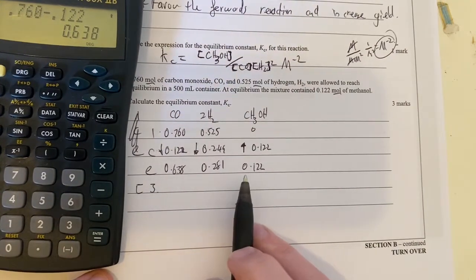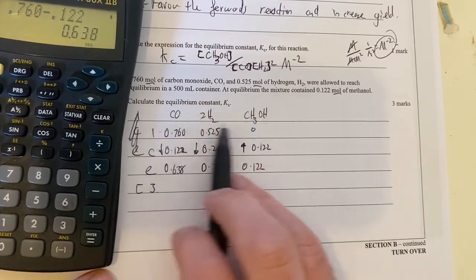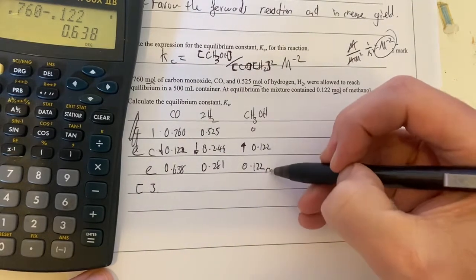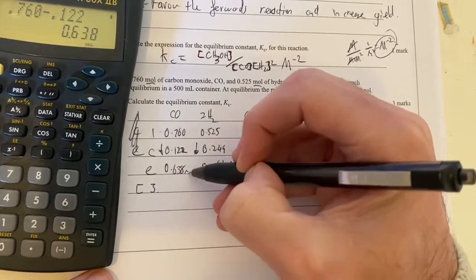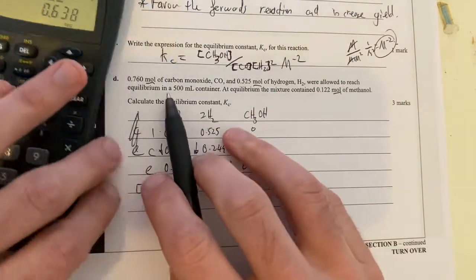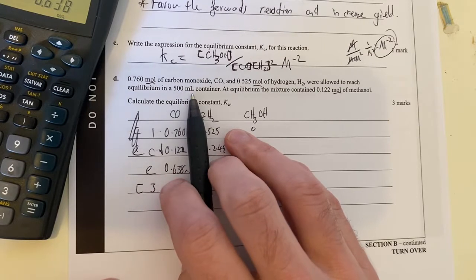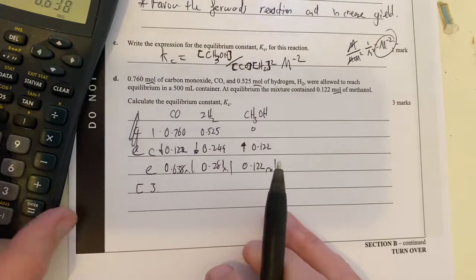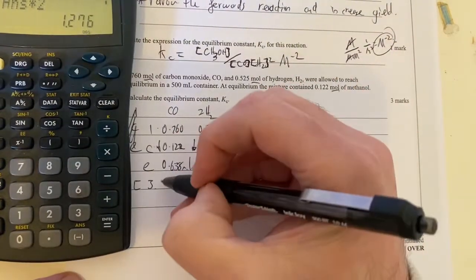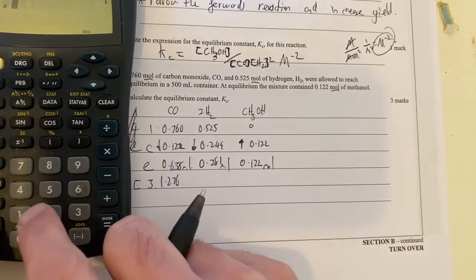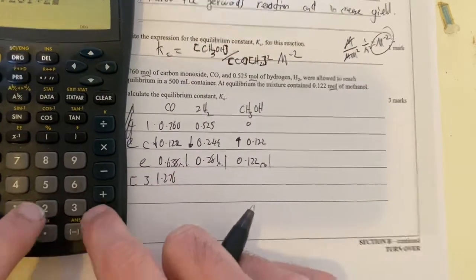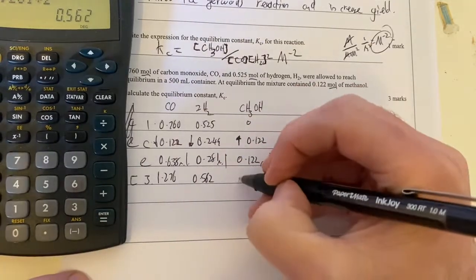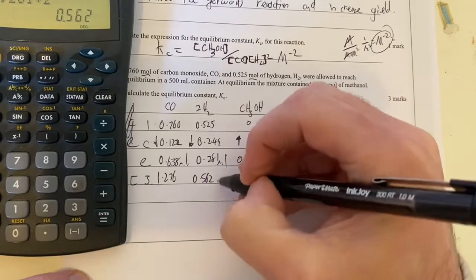And then my equilibrium moles. Remember, this is in mole again, mole and mole. I then need to get a concentration. So we've got a 500 ml container. So therefore, my concentrations will be two times this, or this divided by 0.5. So therefore, if I just do that, times by two is 1.276. 0.281 times two is 0.562. And then that is going to be 0.244. That's all my concentrations.